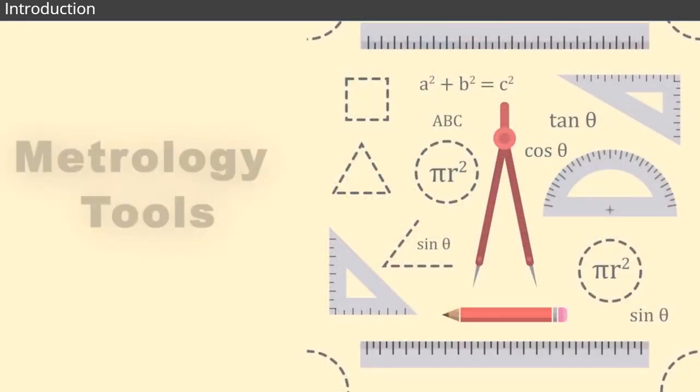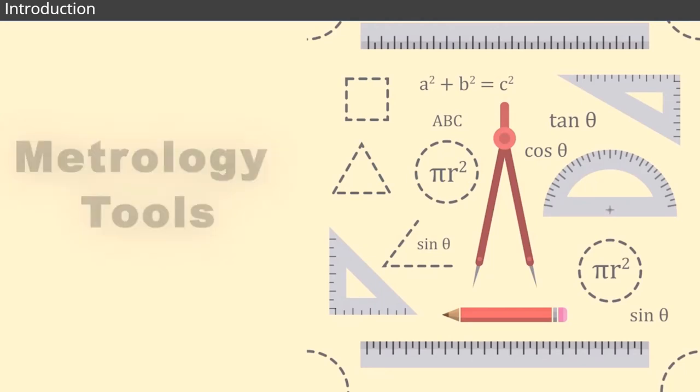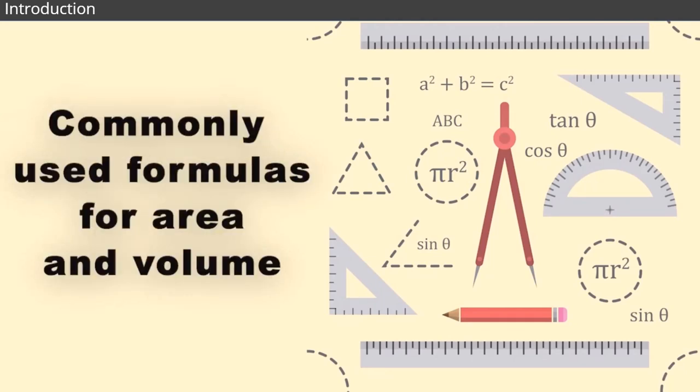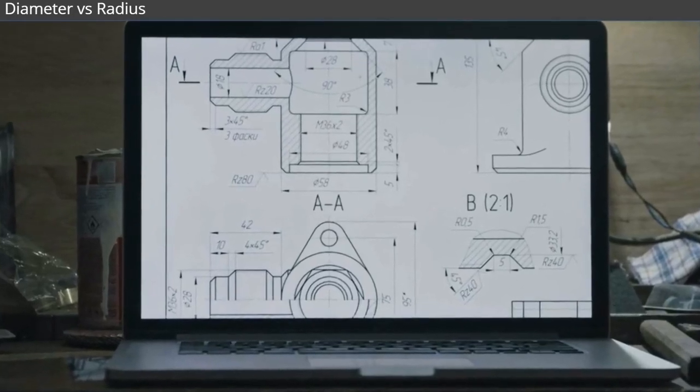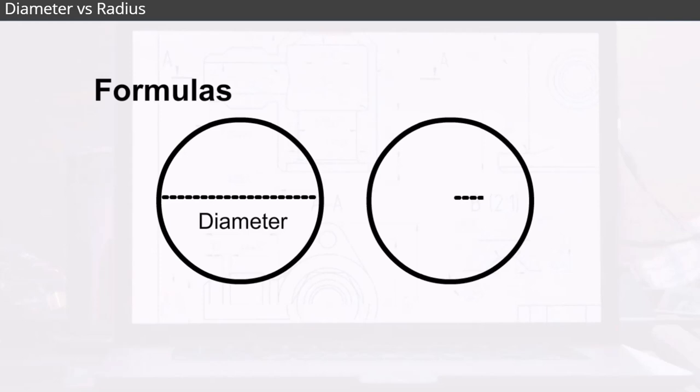Every metrologist uses many tools to ensure precision. In this module, we'll explore some commonly used formulas for area and volume. We'll find our areas and volumes by using formulas written in terms of the diameter of a circle as opposed to the radius.